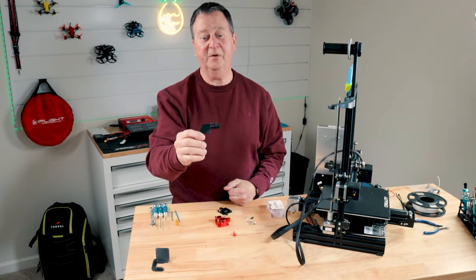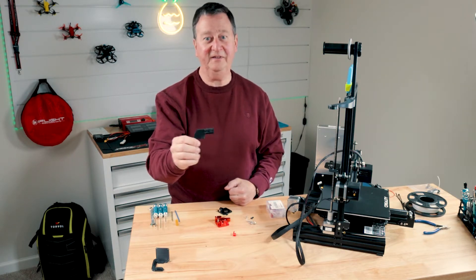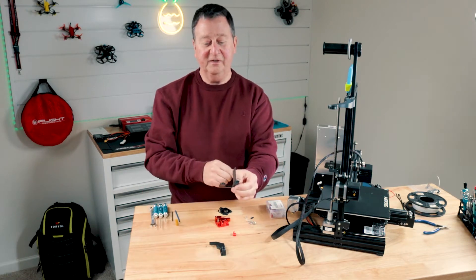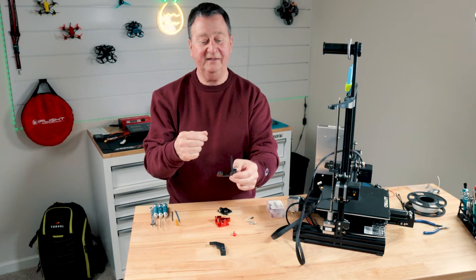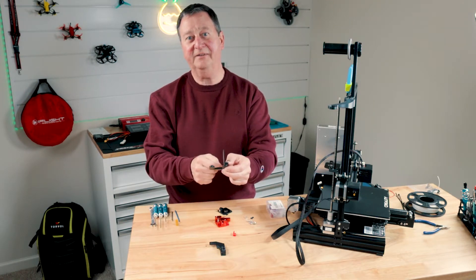This is going to be a strain relief to hold the Bowden tube in place as well as your wires and keep it nice and neat as the carriage is going back and forth. And the last item is going to be an improved cooling duct to help aid the drying of the TPU as it comes out of the nozzle liquid.